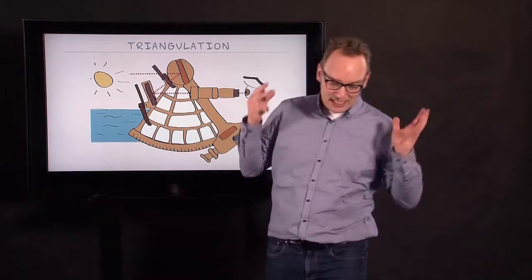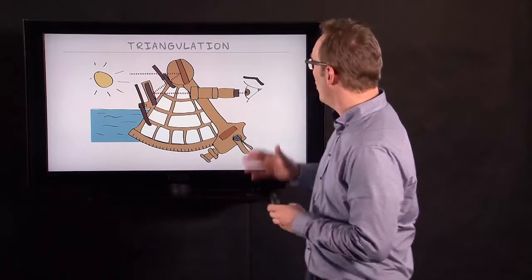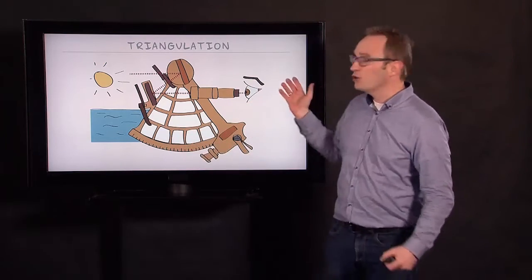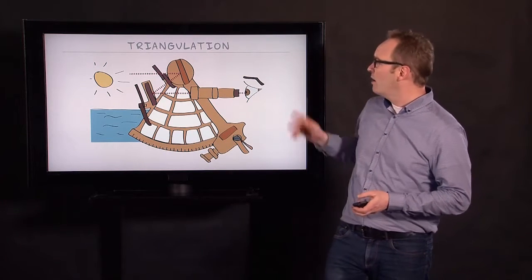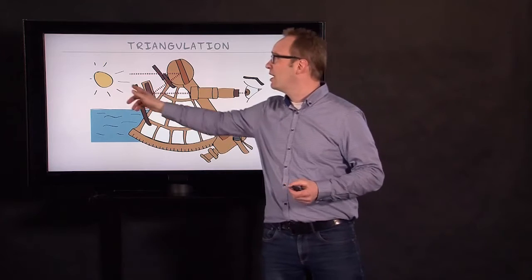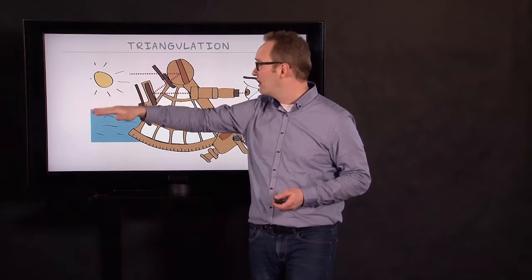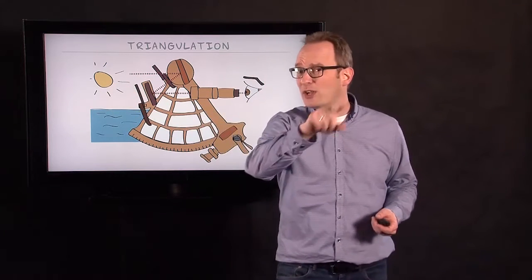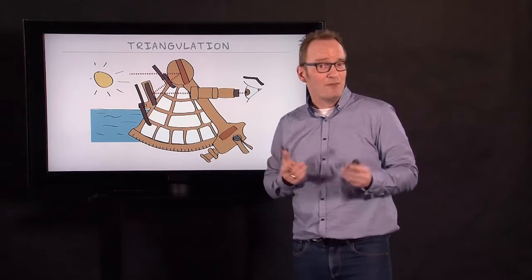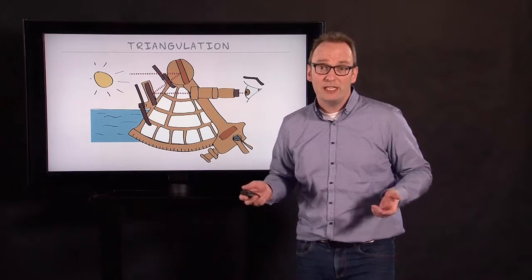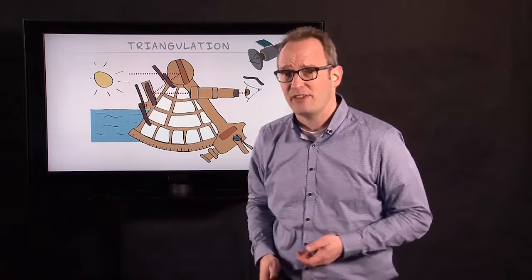It's a sextant. It's what navigators used in order to navigate on ships, but also on land, to measure land and so on. What you do is you try to measure by looking at the sun and looking at the horizon and maybe looking at different stars. By looking at different stars, you can navigate. You usually need three stars in order to navigate.